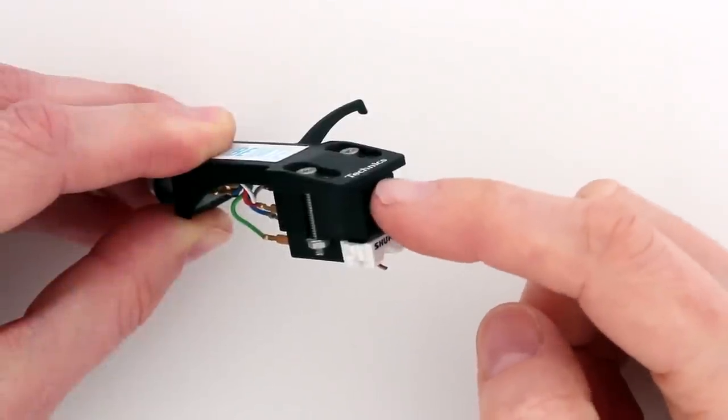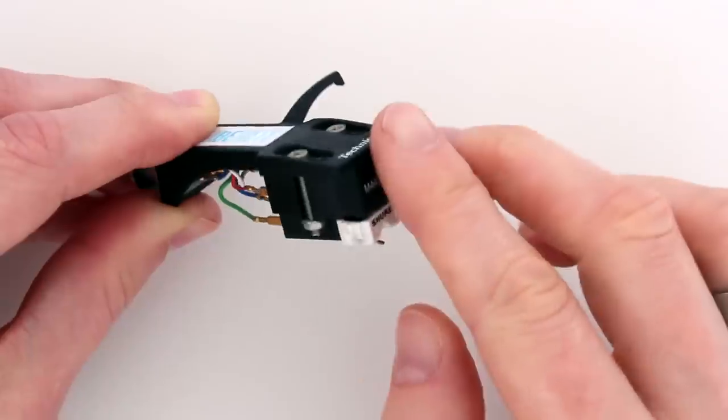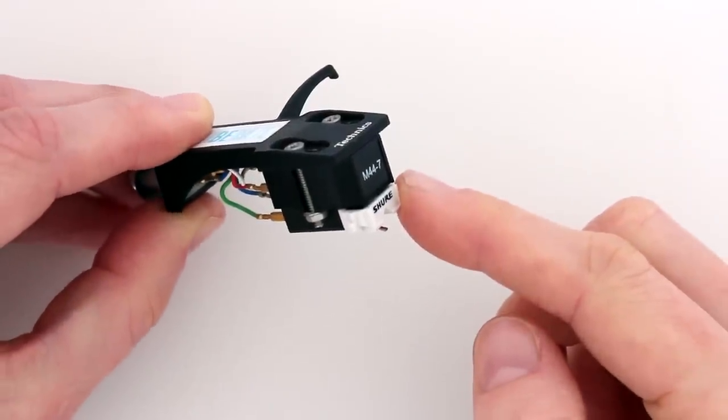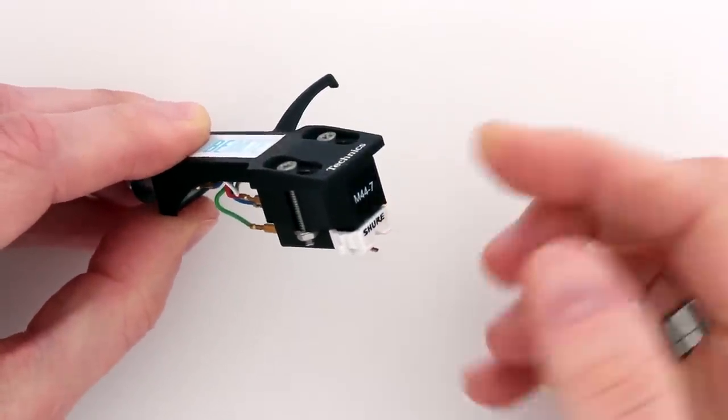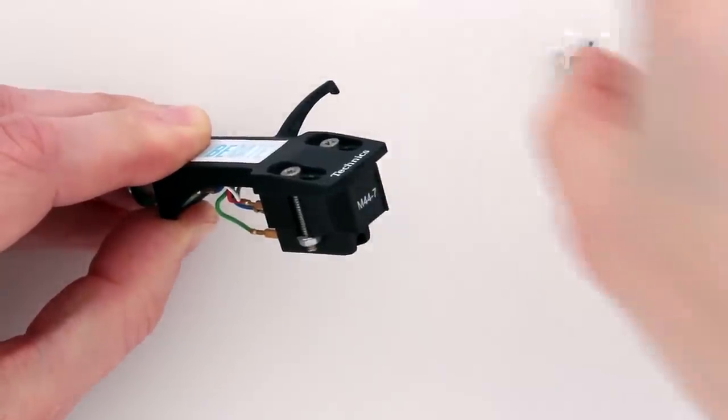This black part here is the cartridge, which attaches to the turntable head shell via these screws here, and then this white part here is the stylus, which you can replace when it gets worn, so it just slides out. I'm just going to put that down for a second.